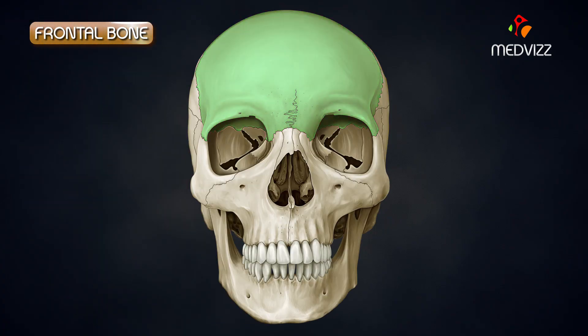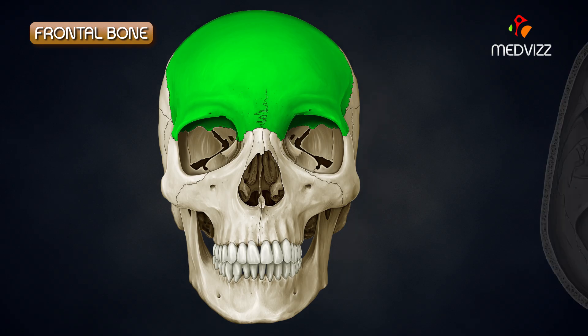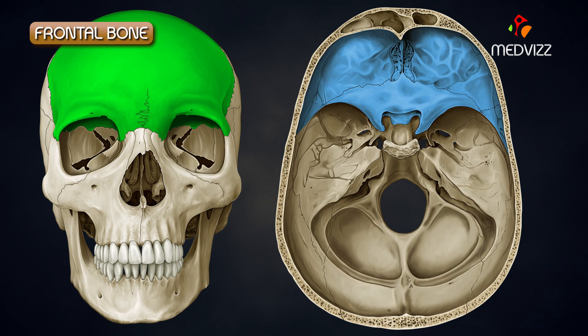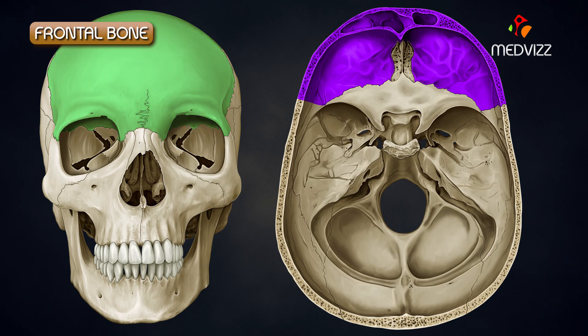Frontal Bone. The frontal bone is situated in the forehead region and is shaped like a shell. The anterior cranial fossa is largely contributed by the frontal bone.